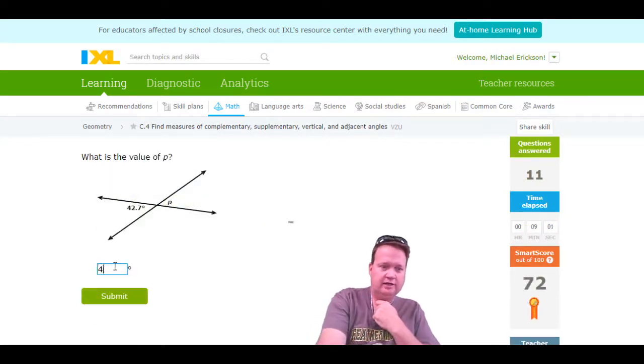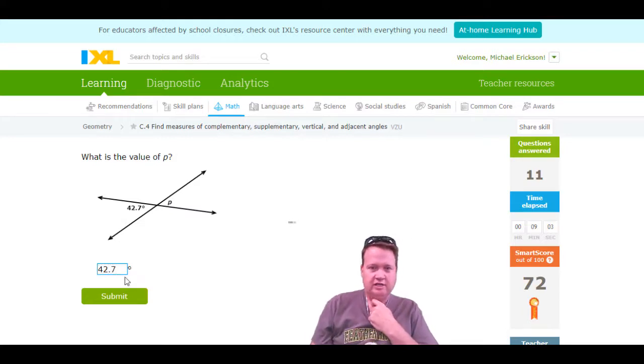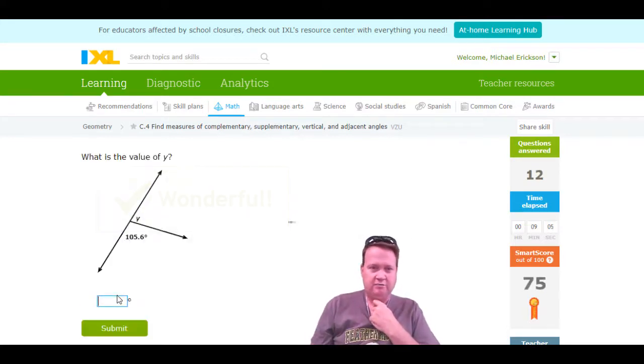And here's another vertical angle. Well, it's going to be 42.7 degrees. So you can see that this one isn't going to be the hardest thing you ever did.